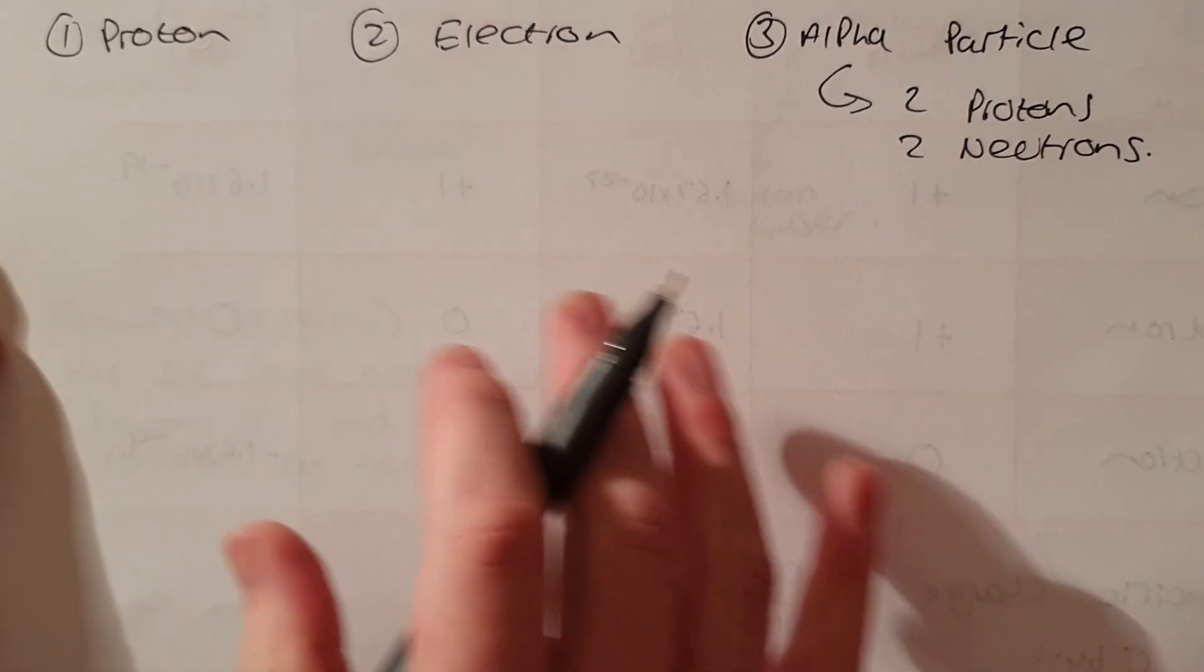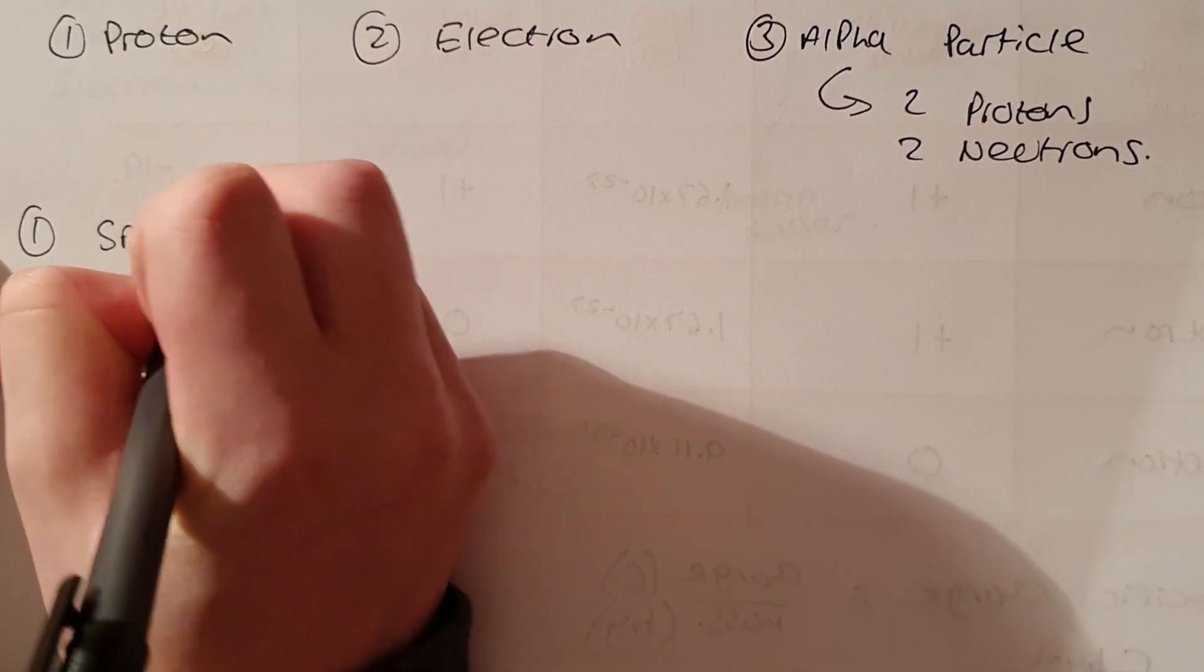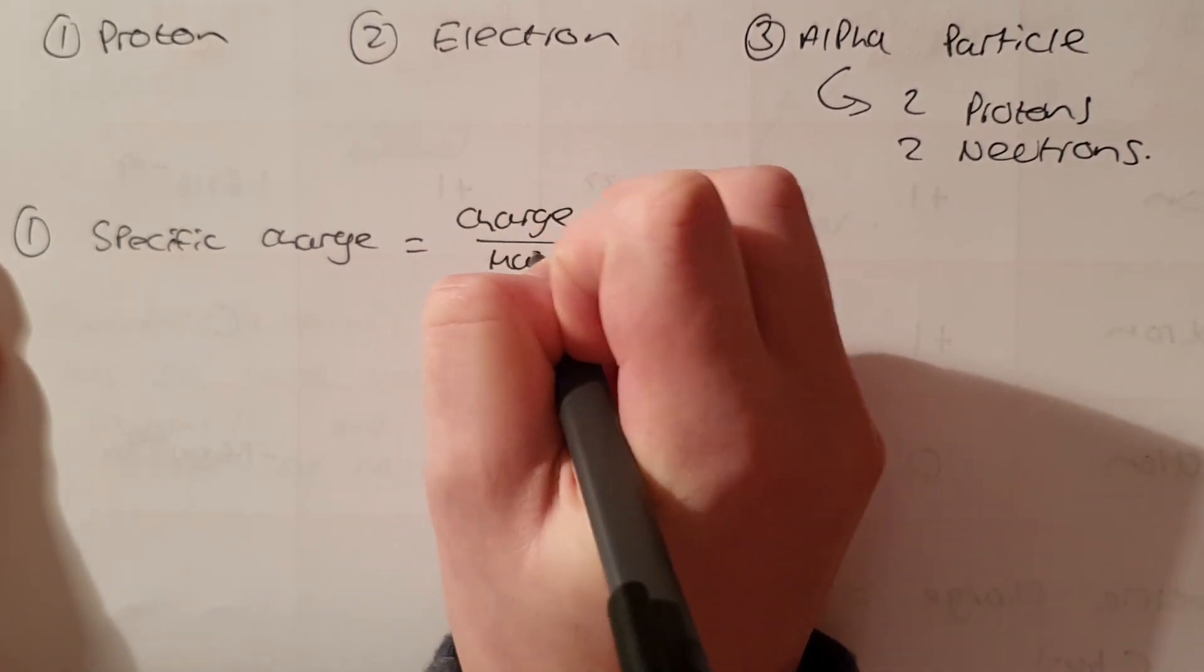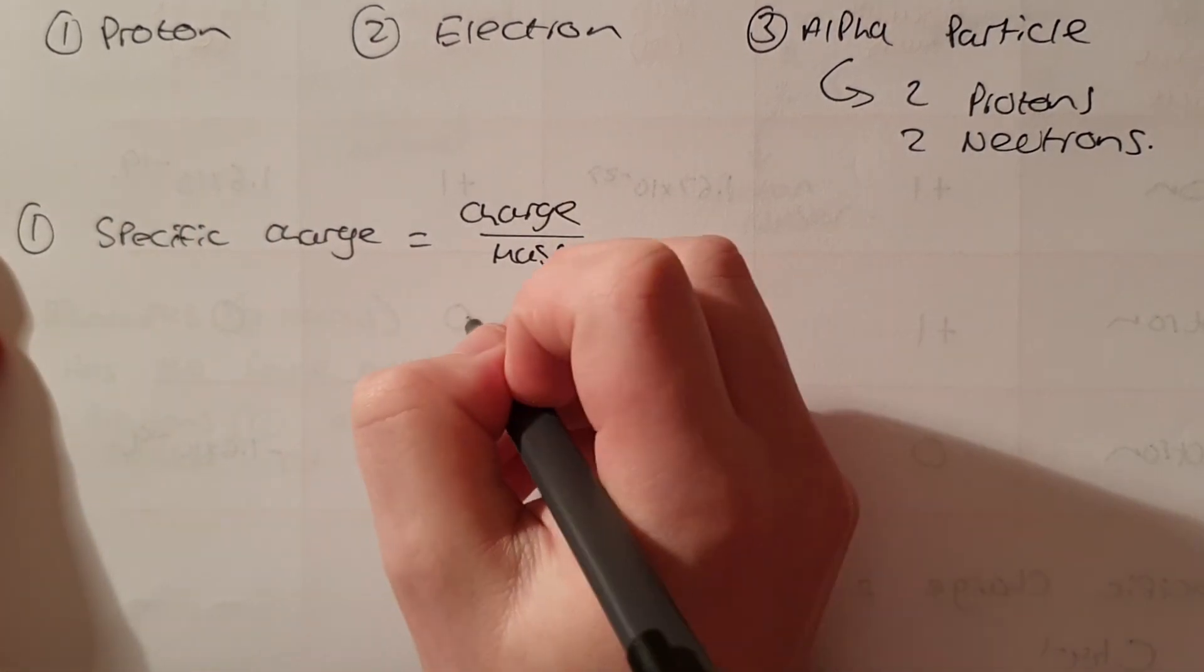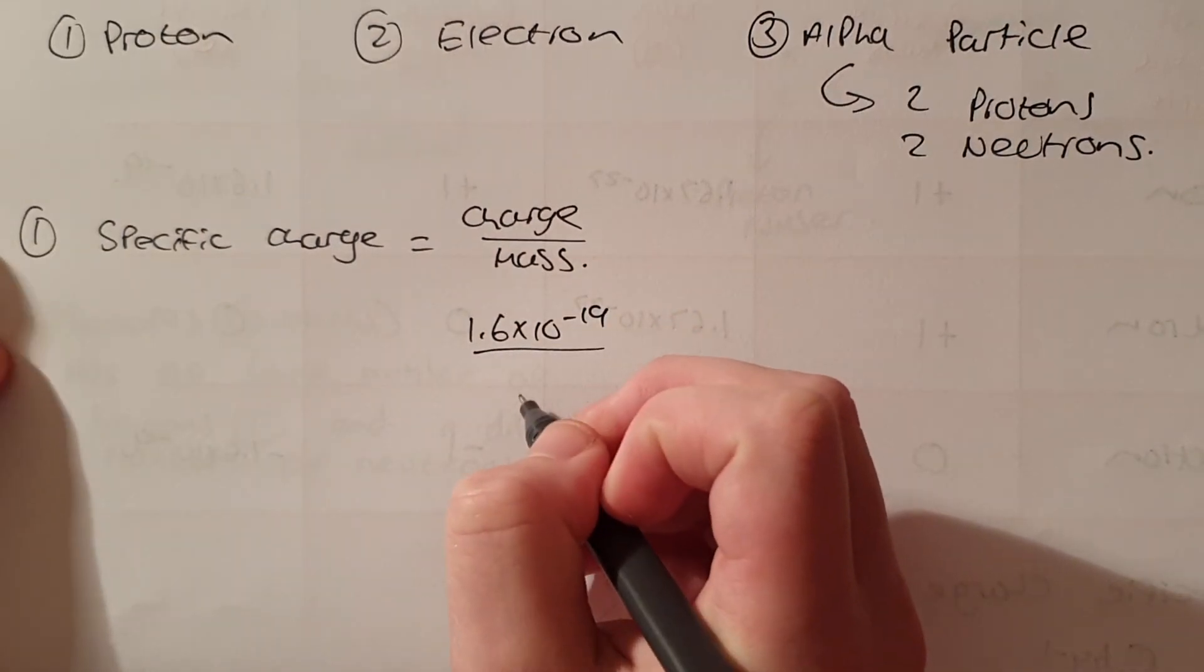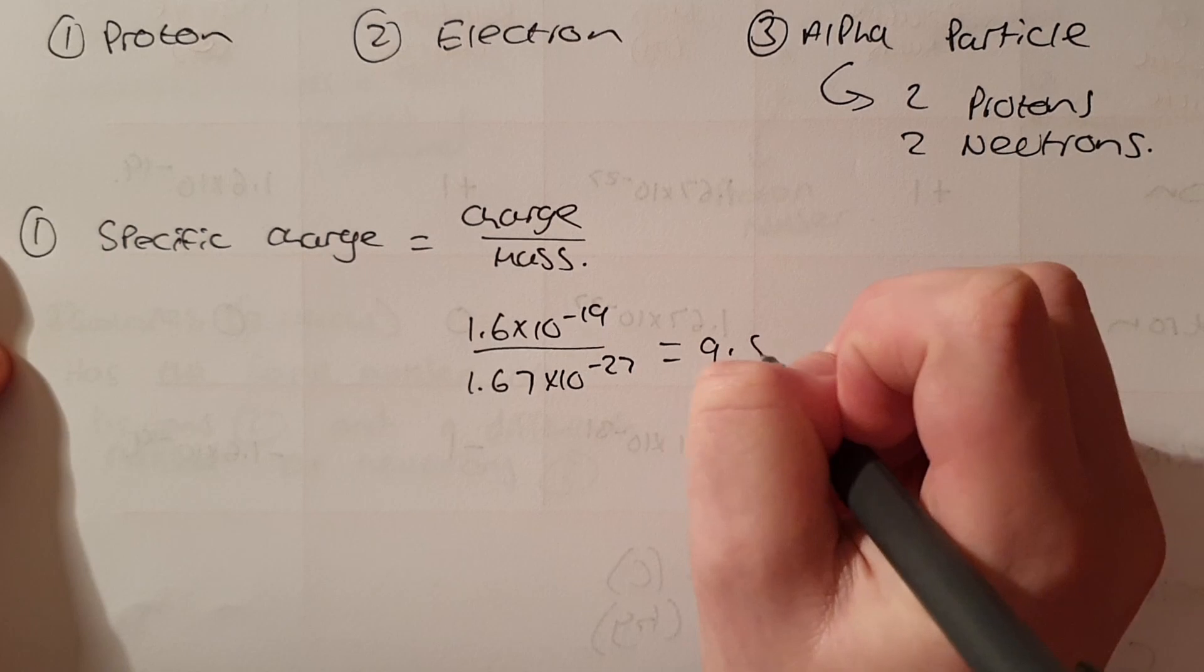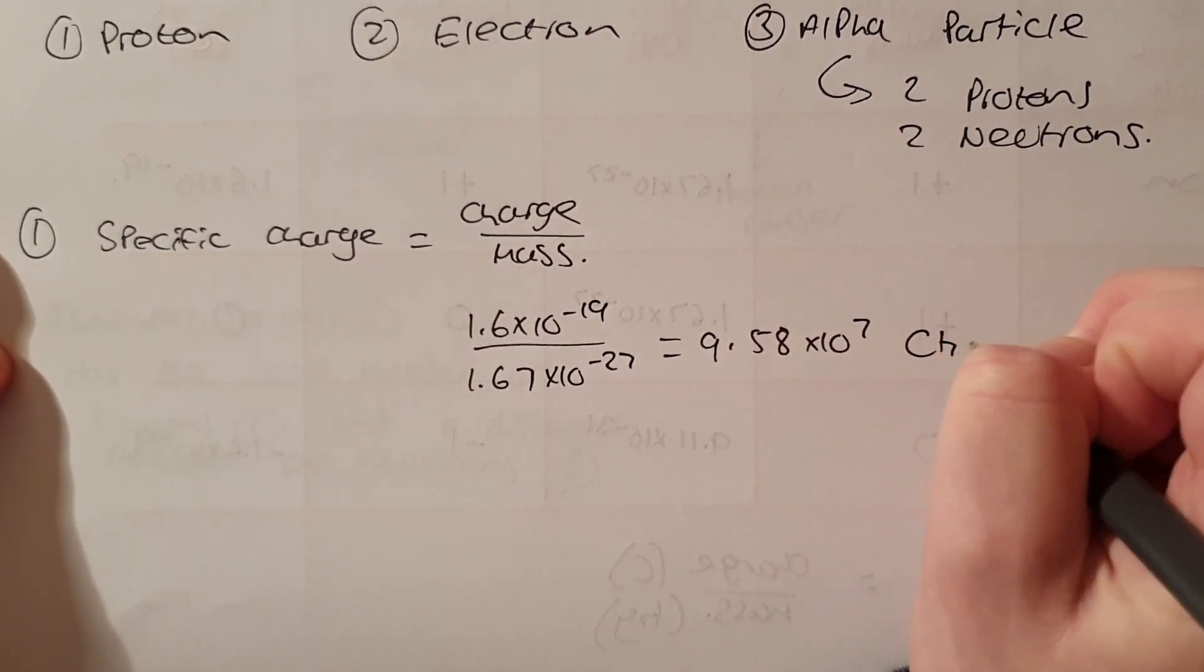So let's have a look at the proton. We're going to use specific charge equals charge divided by mass. Now the charge of a proton as discussed in coulombs is 1.6 times 10 to the minus 19 and we know that a proton has a mass of 1.67 times 10 to the minus 27. When you put it in a calculator you will get a specific charge of 9.58 times 10 to the 7 coulombs per kilogram.